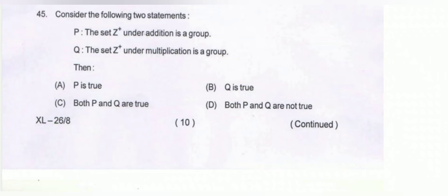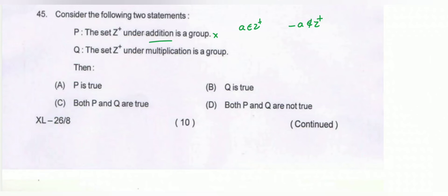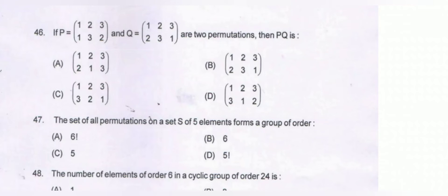Question number 45: consider the following two statements. Statement P: the set Z+ under addition is a group. Statement Q: the set Z+ under multiplication is a group. For any element A belonging to Z+, the inverse with respect to addition is minus A, which does not belong to Z+, so Z+ under addition is not a group. Similarly, for element A in Z+, the multiplicative inverse is 1 upon A, which does not belong to Z+, so Z+ under multiplication is not a group. Both P and Q are not true; option D is correct.